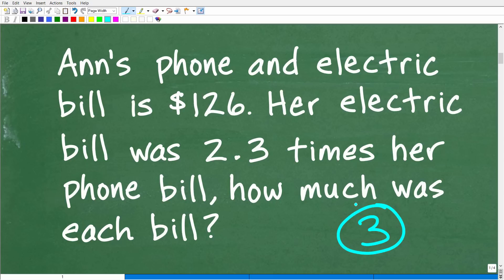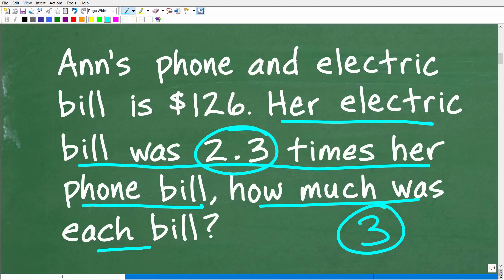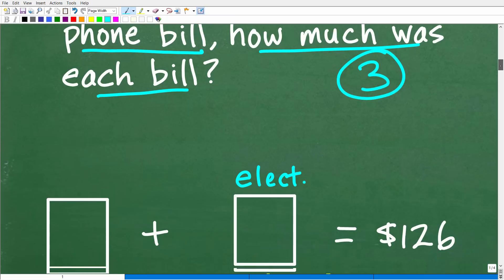Okay, so again, Ann has her phone electric bill. It's $126. Her electric bill, okay, was her electric bill or is her electric bill more than the phone bill? Well, let's just make sure we understand this. Her electric bill was 2.3 times her phone bill. Okay, so her electric bill is more expensive than her phone bill. Okay, so we have to make sure we understand the relationship, how much more expensive? Well, it's 2.3 times more expensive. And the objective here is to figure out how much each bill is. Now, to help decipher or figure out what the problem is saying, exactly saying, precisely saying, a great way to do this is to model the problem. Okay, so you can kind of see what's going on.